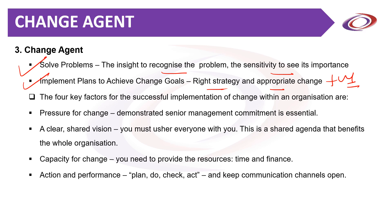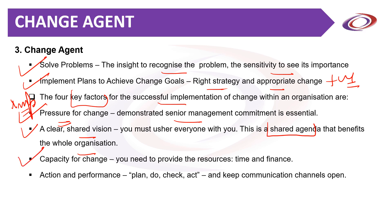There are four key factors for the successful implementation of change. First, there should be a pressure for change — demonstrated by senior management's commitment. Second, a clear shared vision should be communicated with everyone as a shared agenda that benefits the whole organization. Third, the capacity for change — understanding the resources, time, and finance the organization can devote. And finally, action and performance: plan, do, check, and act. It is a dynamic strategy — we should keep communication channels open, implement, check if it is going according to strategy, and act accordingly.